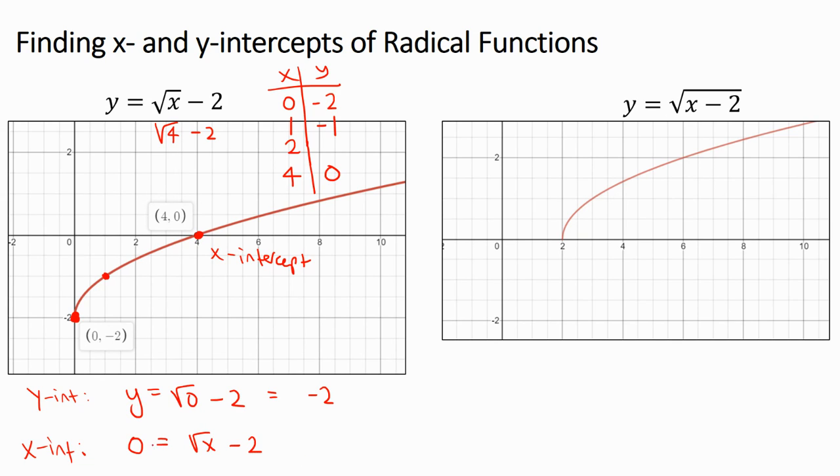So if we had an equation 0 equals square root of x minus 2, the first thing we have to do is add 2 to both sides and so we get 2 on the left and that's equal to the square root of x. Now how do we undo the square root? We square it. We raise it to the second power and that's why 4 equals x.